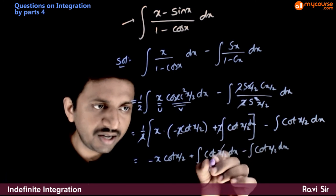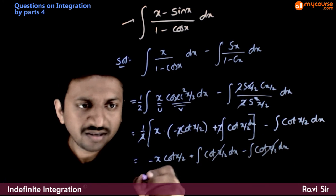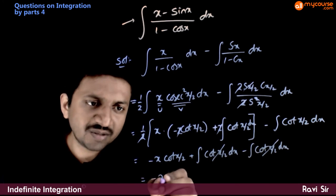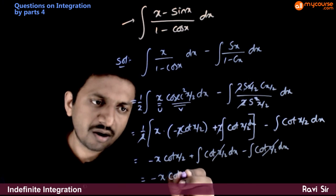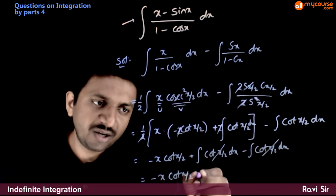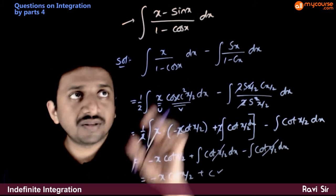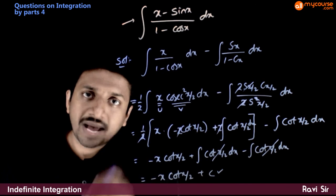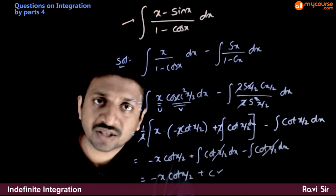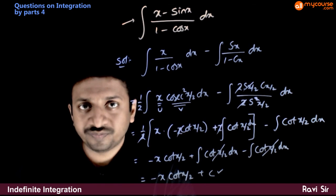The two cot(x/2) integrals are getting cancelled, so I don't need to integrate them. The answer is minus x·cot(x/2) plus C. So the integration of this function is minus x·cot(x/2) plus C.